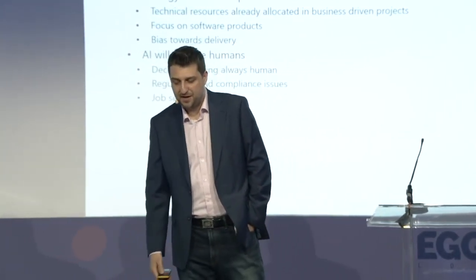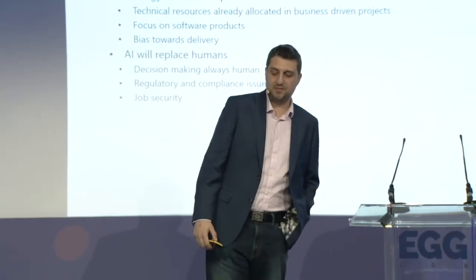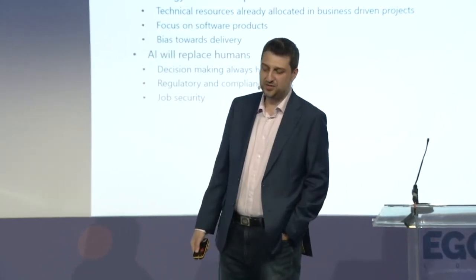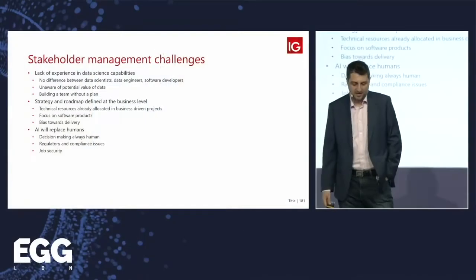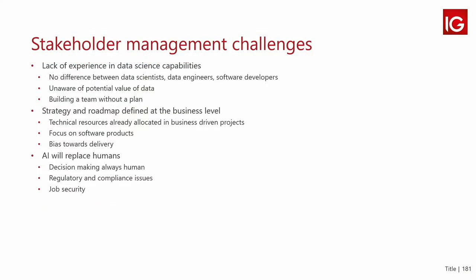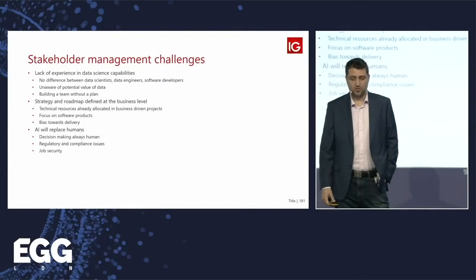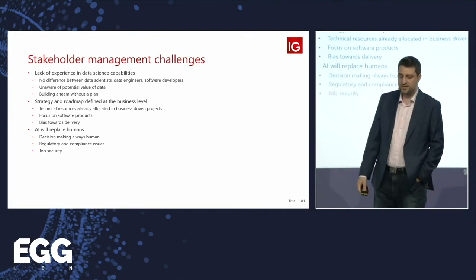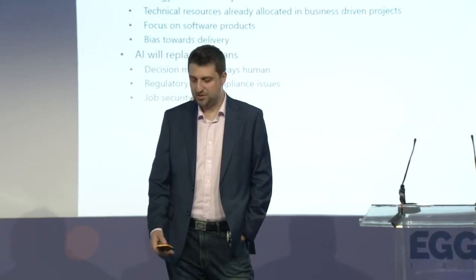The third group — hopefully rare but real — is fear from stakeholders that AI will replace humans. They want all decision-making to remain at the human level, which isn't necessarily a bad thing. There's also a host of regulatory and compliance issues, which are more serious, and data scientists rarely think in terms of regulations. And then there's the group of people who are genuinely afraid that a solution will get them fired — at the stakeholder level — without realizing how difficult it actually is to build.